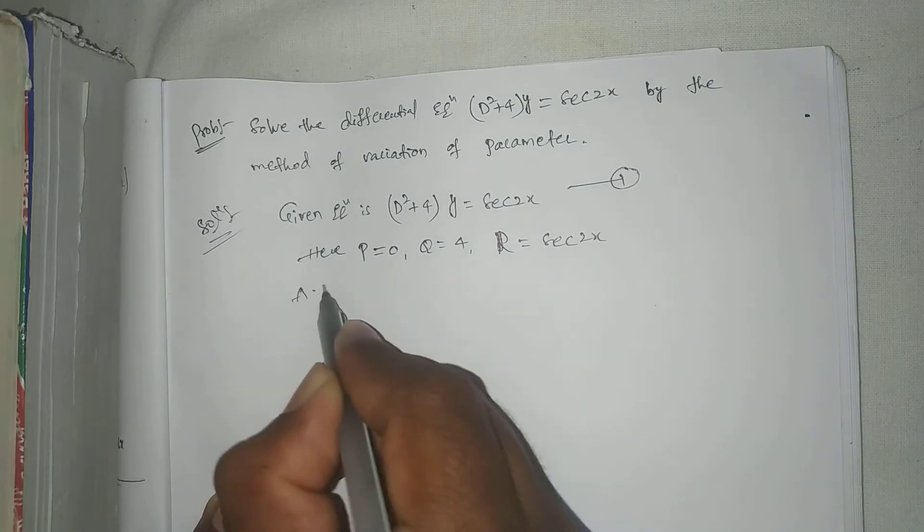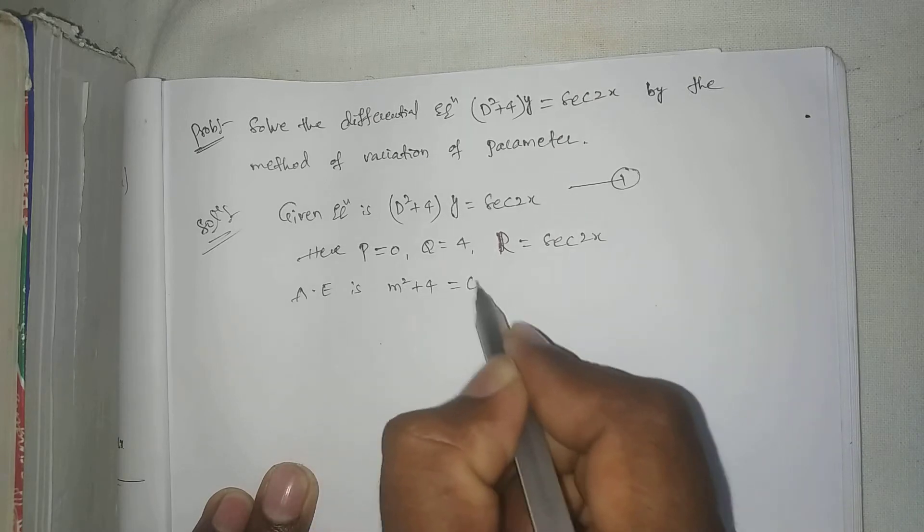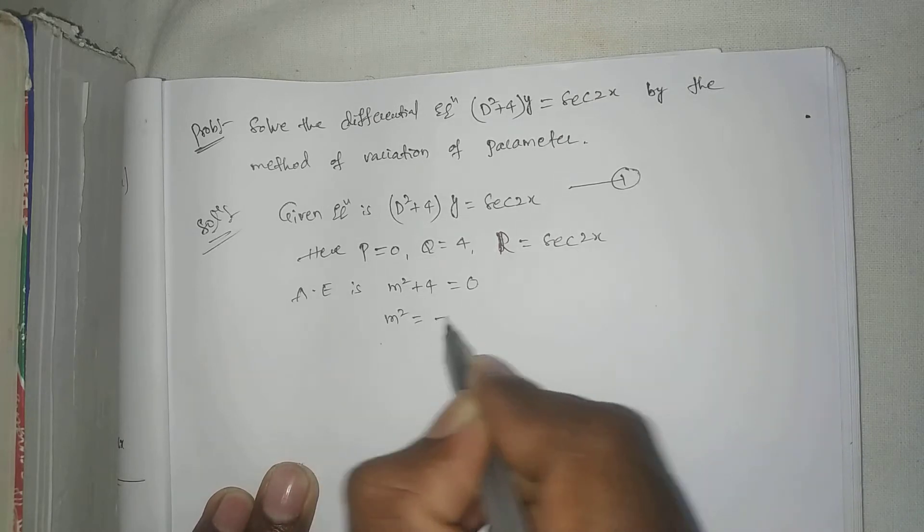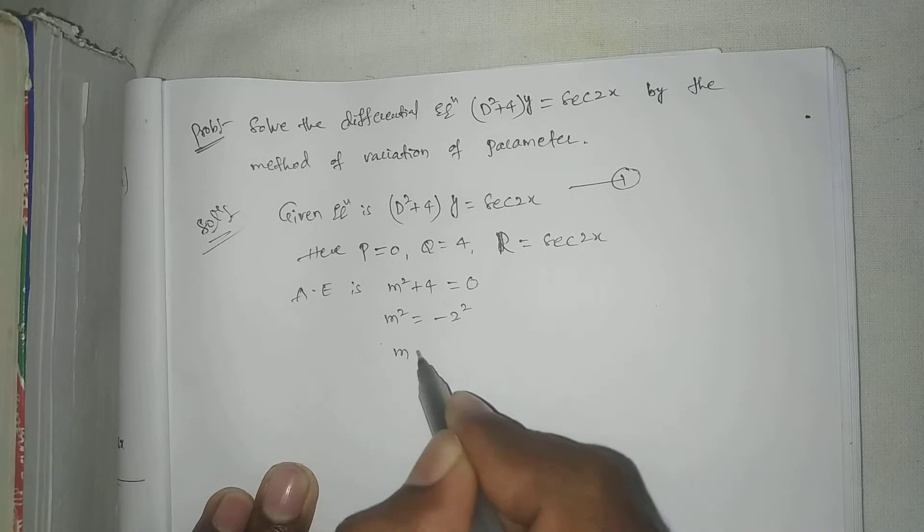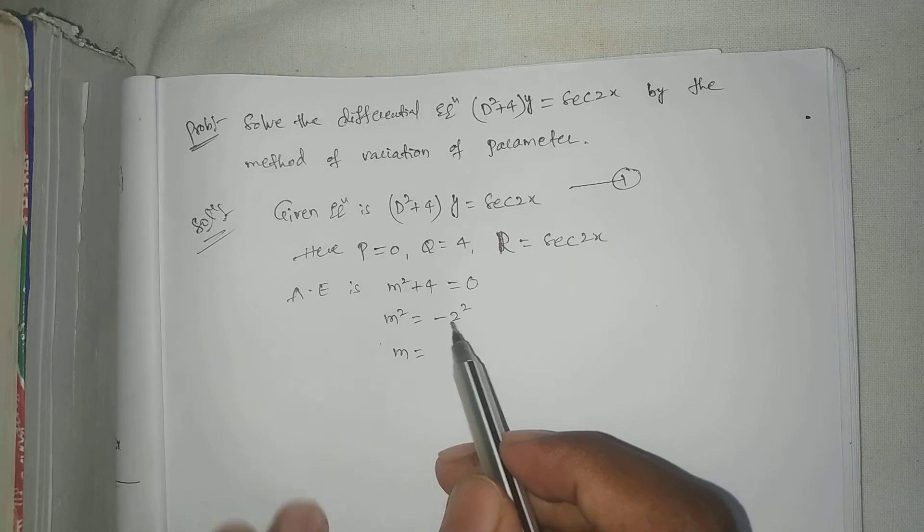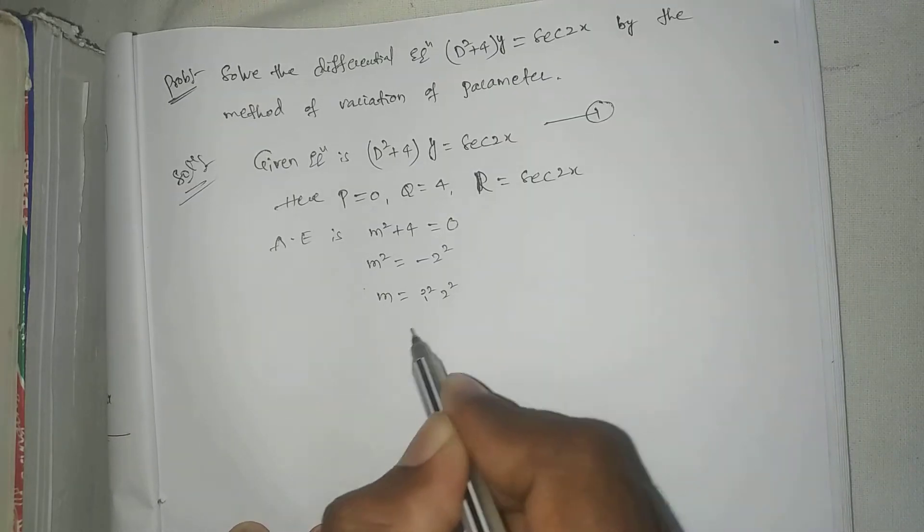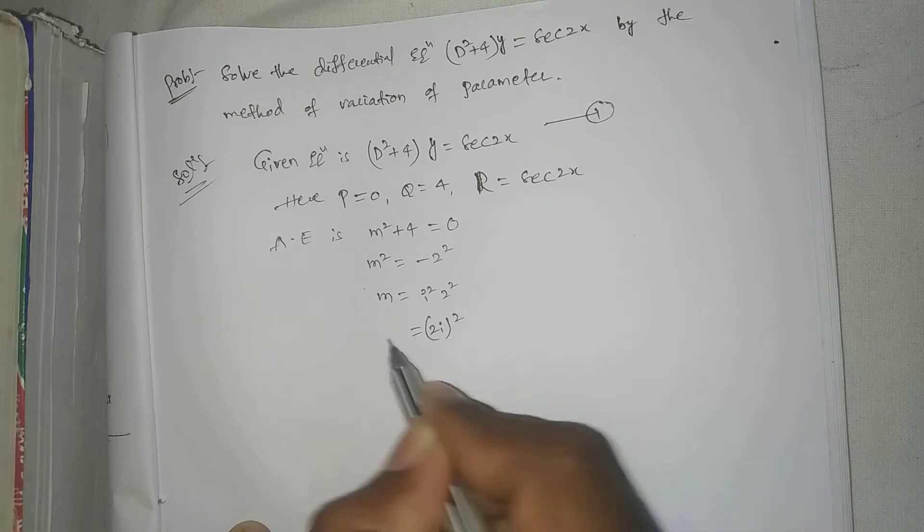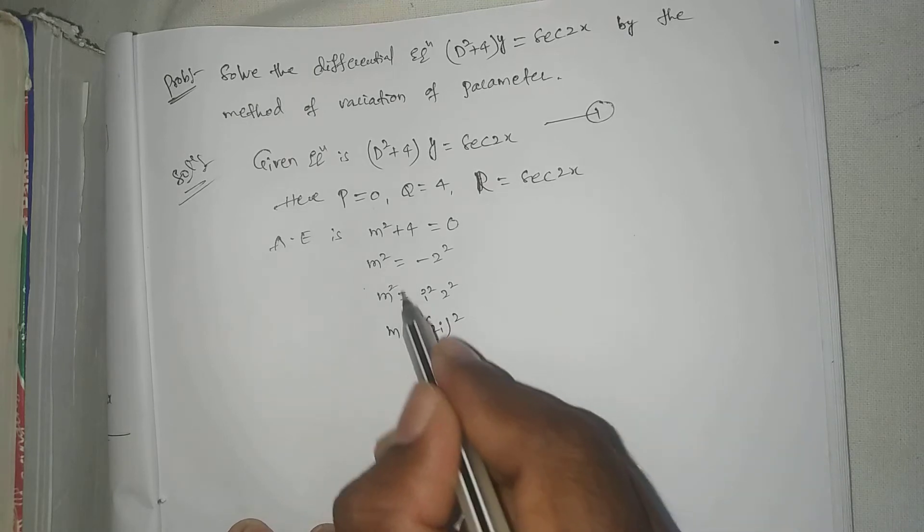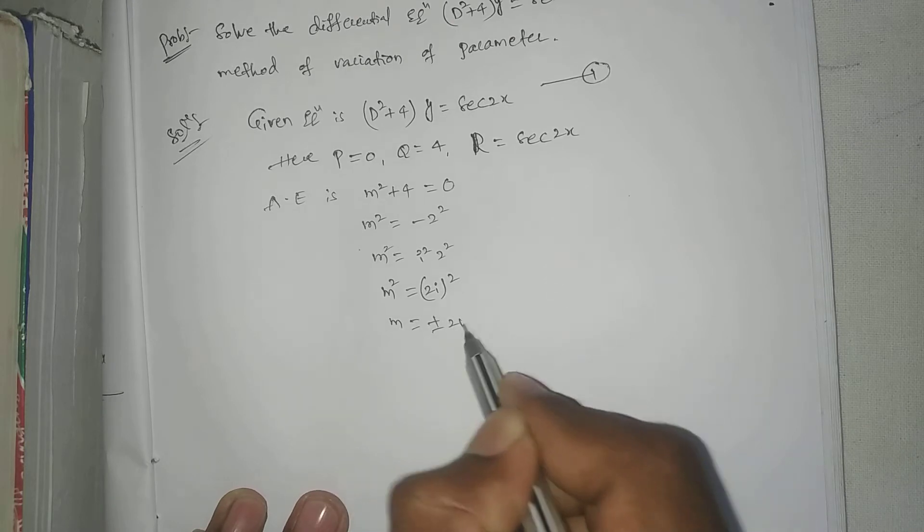Right, auxiliary equation is m square plus 4 equal to 0, m square equal to minus 2 square. That equal to i square into 2 square, that equal to 2i whole square, m equal to plus or minus 2i.